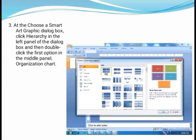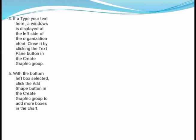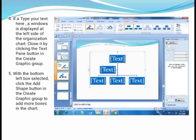Look at this image showing how to select a SmartArt graphic. A dialog box appears. Step 4: A 'Type your text here' window is displayed on the left side of the organization chart. You can show or hide it by clicking the Text Pane button in the Create Graphic group. Step 5: With the bottom-left box selected, click the Add Shape button in the Create Graphic group to add more boxes to the chart. Look at this image showing the Add Shape button in the Create Graphic group.